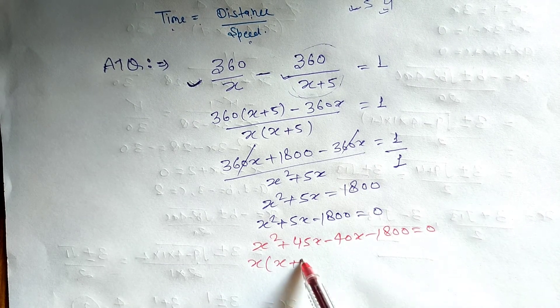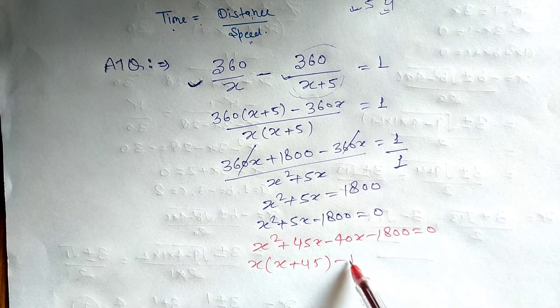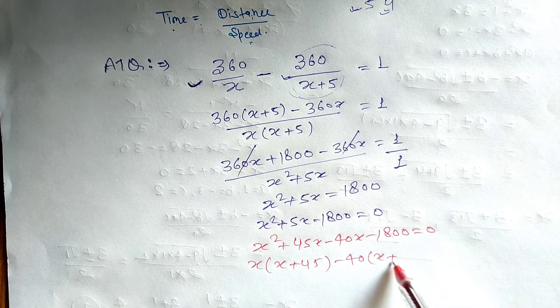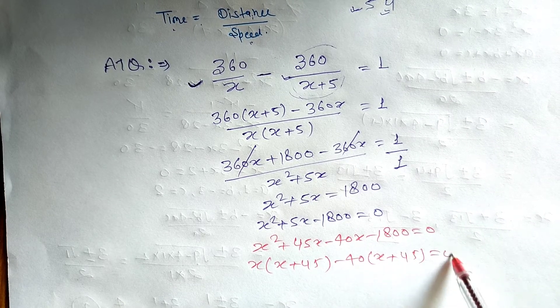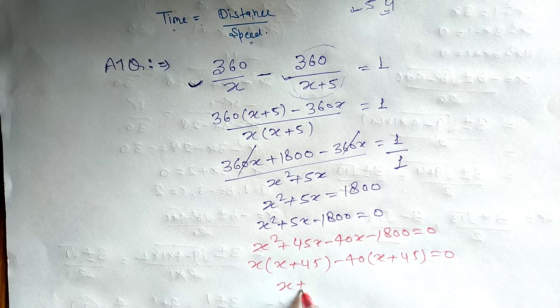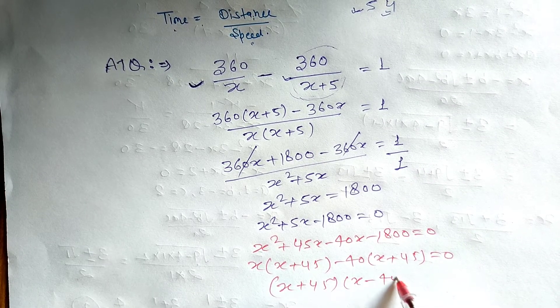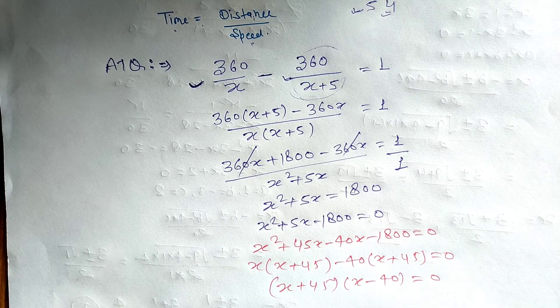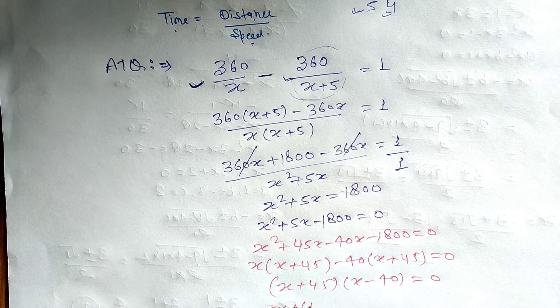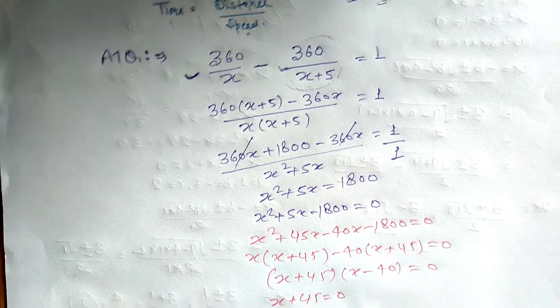So x plus 45, x minus 40, and x plus 45 equal to 0. So x is minus 45 and x is 40. So this is the complete question.